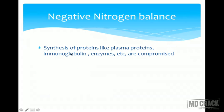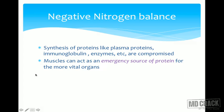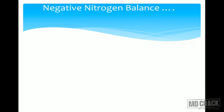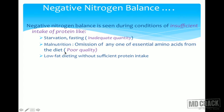In negative nitrogen balance, synthesis of plasma proteins, immunoglobulins, and enzymes gets compromised. Muscles act as an emergency source of protein for more vital organs, leading to depleted muscle protein. A person in negative nitrogen balance is more prone to bacterial infections and also to edema. Negative nitrogen balance causes include insufficient protein intake such as starvation, fasting, malnutrition, omission of any one essential amino acid, and low-fat dieting without sufficient protein intake.